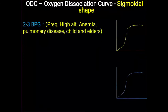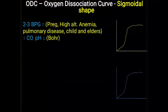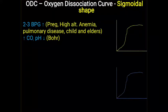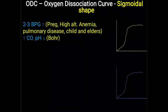Further, in pulmonary disease and also in childhood and elderly patients, 2,3-BPG levels are found to be elevated. All these conditions help shift the sigmoidal curve towards the right side. In summary, increased 2,3-BPG levels help deliver more oxygen to the tissue level.